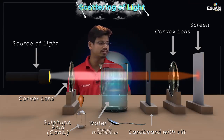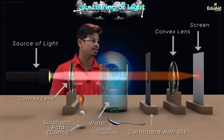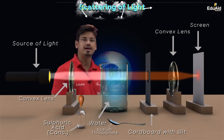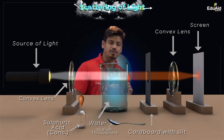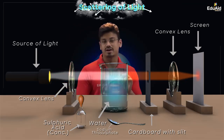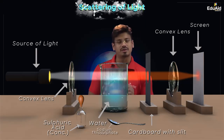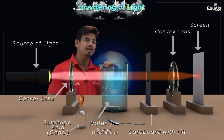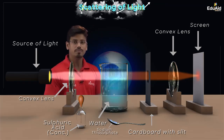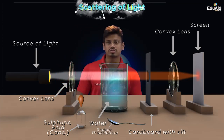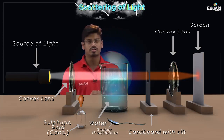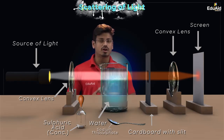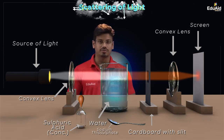If you observe the screen from the front side, you will see that a red patch is formed on the screen. This explains the color of the sun at the time of sunrise and sunset — the sun appears red because red light having a longer wavelength gets scattered the least. This is all from this session where we have studied about scattering of light. In our upcoming session we are going to summarize the entire chapter. Thank you.